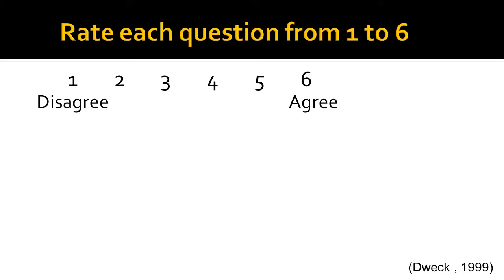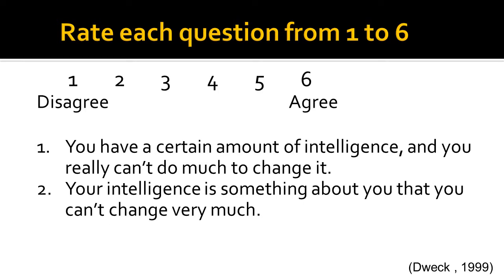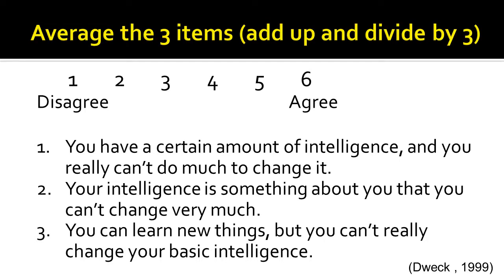I'd like to start by asking you to rate three questions from one to six, where one means disagree and six means agree. Please write down your answers so that you remember them. You have a certain amount of intelligence and you really can't do much to change it. Your intelligence is something about you that you can't change very much. You can learn new things, but you can't really change your basic intelligence. Pause the video if you need more time. Otherwise, continue by averaging your scores to the three items by adding them up and dividing the sum by 3.